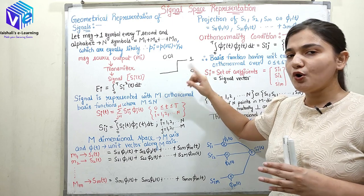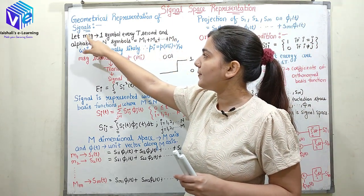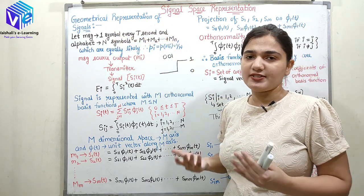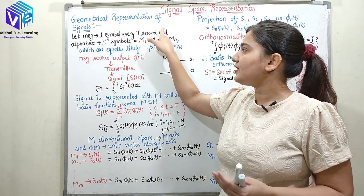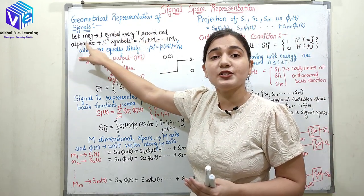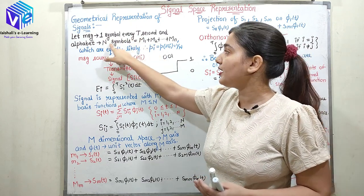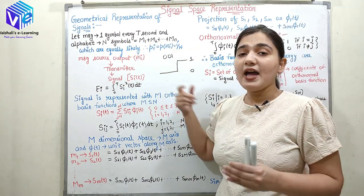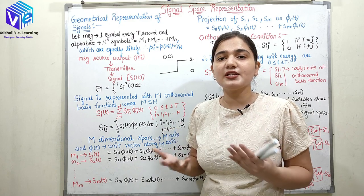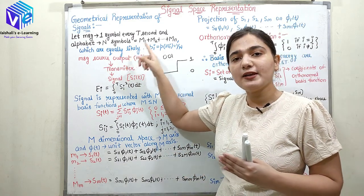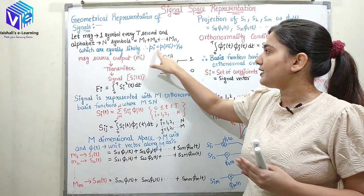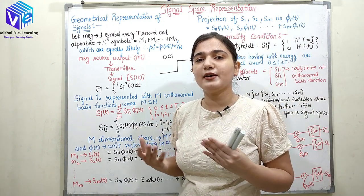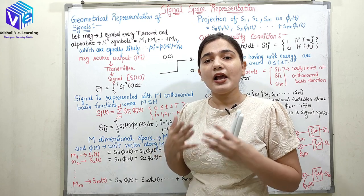A signal is in the form of 0 and 1 only. Here if I have the message, it is providing one symbol every T seconds. We have one symbol every T second and we have an alphabet which consists of n symbols. I have represented them with m1, m2 up to mn and I have taken the probability of occurrence of each symbol to be the same — all of them are equally probable, so probability equals 1 upon n.